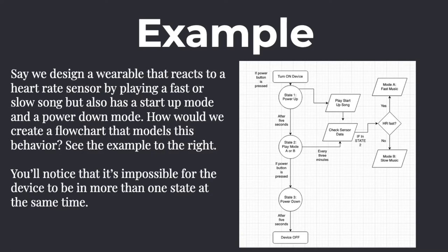If there's a change to our input state, then we want to change our output state. We don't want to constantly re-trigger the same interactivity — otherwise the person will hear the same song starting over and over. We only want to change if there's been a change in the heart rate. Finally, we want to have some timeout function or a way of ending our program. Let's say there's a power down button, and we want to play a little jingle for about five seconds while powering down.